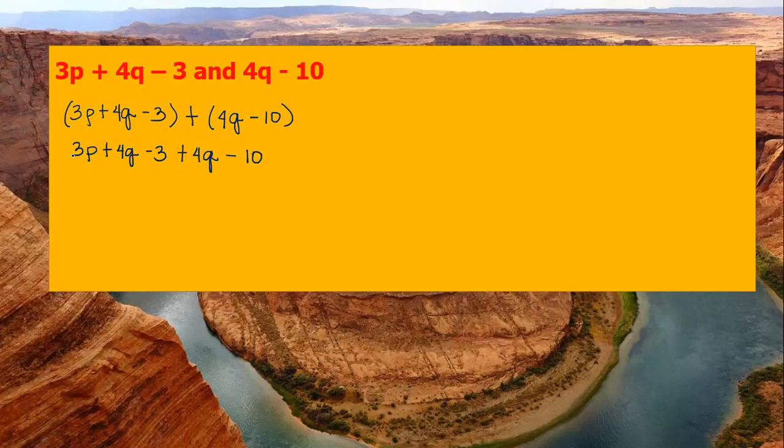Then combine the like terms. So 3p doesn't have a partner, and then plus 4q plus 4q minus 3 minus 10.